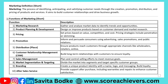8. Market Segmentation and Targeting. This function involves dividing the market into smaller segments based on characteristics like age, income, or preferences. Companies then target the specific segments most likely to buy their products. For example, a company like Johnson & Johnson creates different products for babies, adults, and elderly people. Each product targets a specific segment, and their marketing efforts are tailored accordingly.